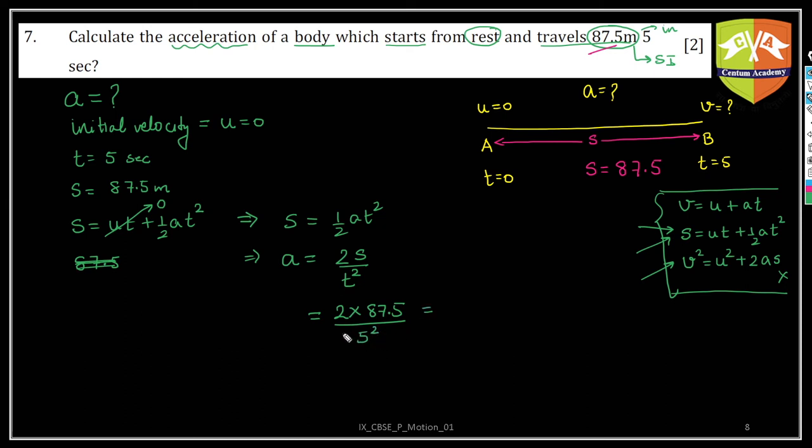So if you see, this is nothing but 175 - am I right? Yeah, 175, divided by 25, and this is nothing but 7. 25 times 7 is 175.